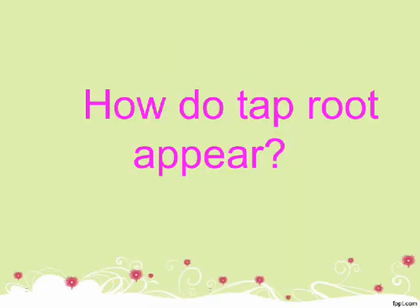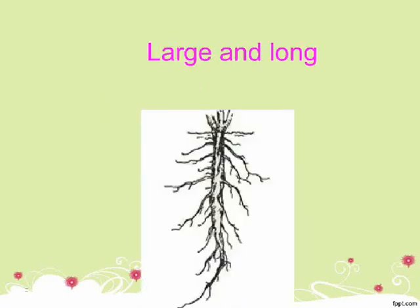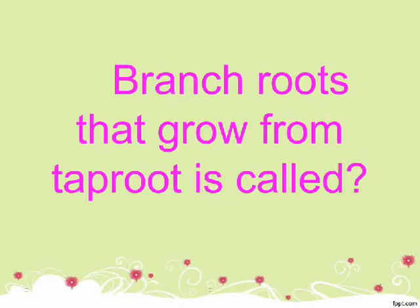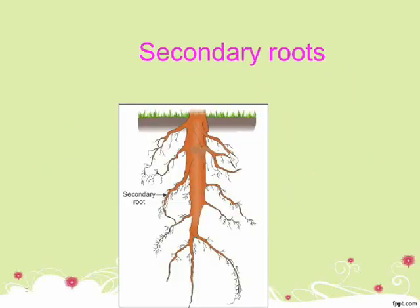How does a taproot appear? A taproot appears large and long. Branch roots that grow from the taproot are called secondary roots.